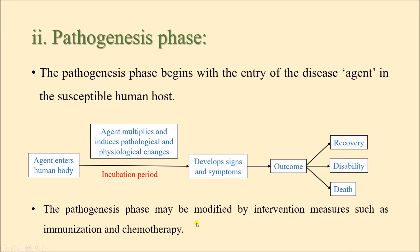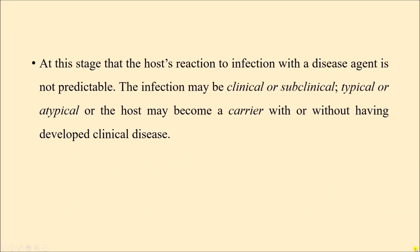The pathogenesis phase may be modified by intervention measures such as immunization and chemotherapy. These are the measures we can take to stop the progression of the disease in the pathogenesis phase so that complications or even death do not occur. At the stage of pathogenesis it is very difficult to predict how the host body is going to react to the infection — that means the entry of the infectious agent. Depending on how the host body reacts, we can have clinical or subclinical cases.